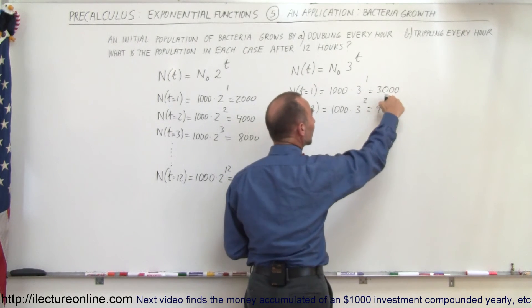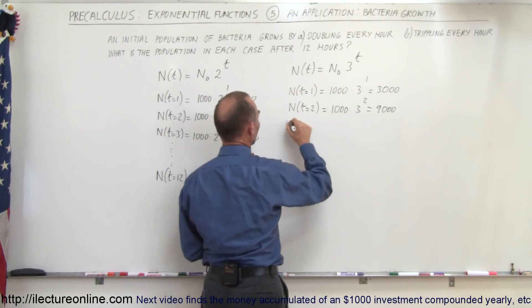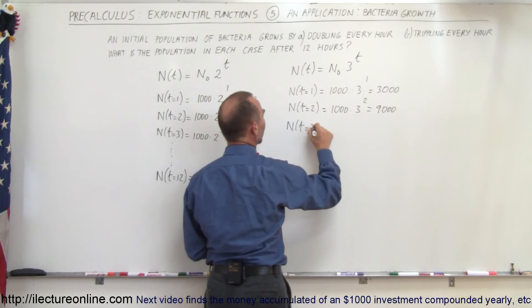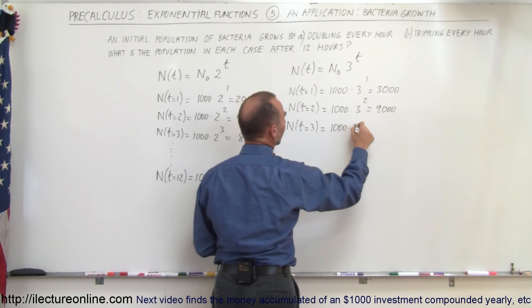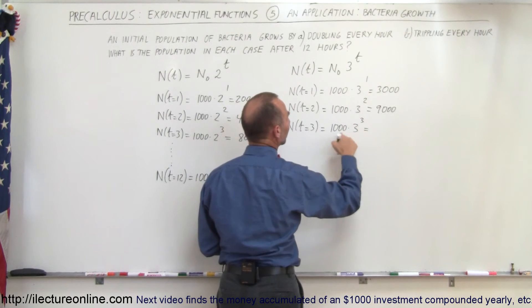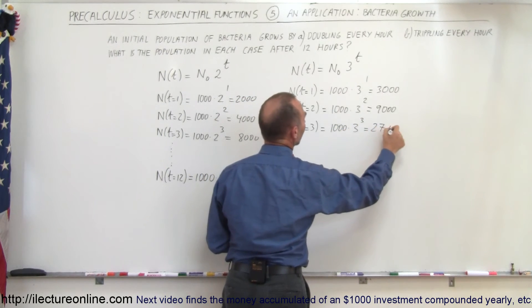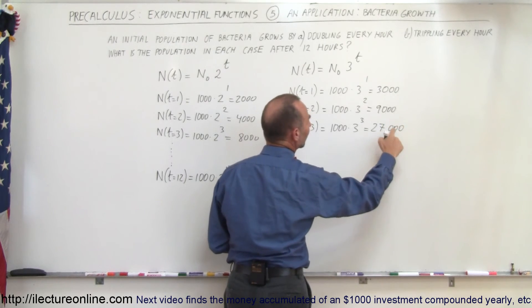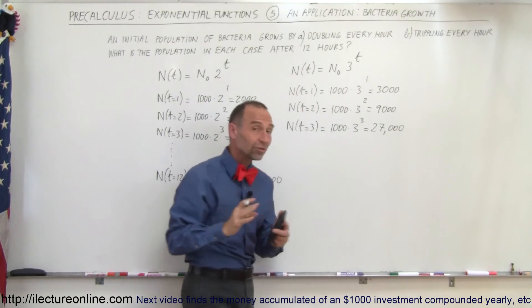You can see that 9000 is 3 times as much as 3000. N(3) is 1000 times 3 to the third power, which is 27. That would be 27,000. Notice 27,000 is 3 times 9000. It works out really nicely.